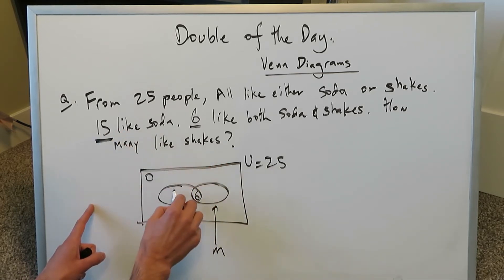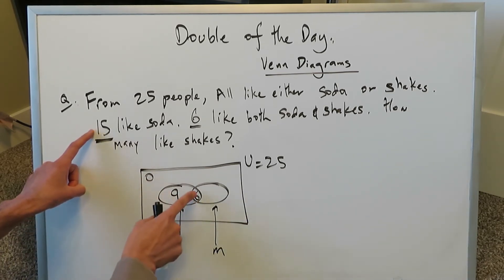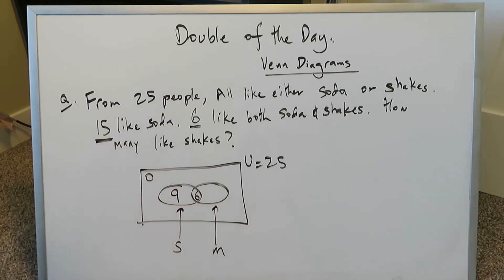So 15 minus 6 gives you 9 who only like soda. Out of these 15, 9 only like soda but 6 also like milkshakes.